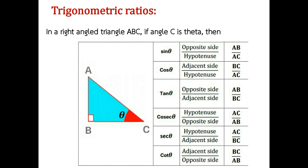Trigonometric Ratios: In a right angle triangle ABC, if angle C is theta, then AB is the opposite side and BC is the adjacent side. The first ratio is sine theta, which is the ratio of opposite side to hypotenuse — AB by AC. The next is cos theta, the ratio of adjacent side to hypotenuse — BC by AC. The third is tan theta, the ratio of opposite side to adjacent side — AB by BC.